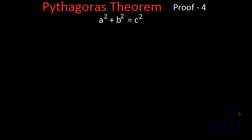Hi, so here we have one more proof of the Pythagoras theorem. What is the Pythagoras theorem? It is a squared plus b squared is equal to c squared, where a and b are the sides adjacent to the right angle in a right angle triangle, and c is the hypotenuse.